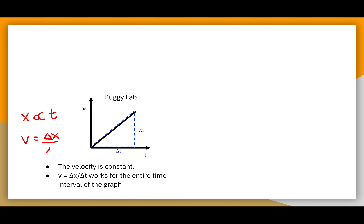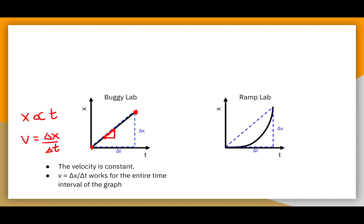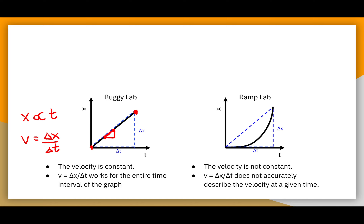We calculated that using the point-slope formula because it was a constant slope. We could have chosen the beginning and end points, but realistically any two points in that region would give the same slope. In the ramp lab, that will not be the case. If we looked at the beginning and end points, we'd have a straight line connecting them, but it certainly does not best fit the slope of the entire data range. Our velocity is not constant, so the equation v equals delta x over delta t does not accurately describe velocity.